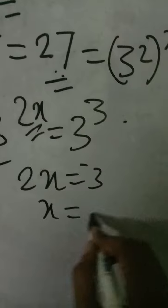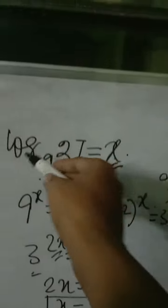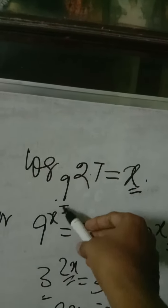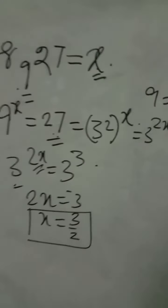So x will be equal to 3 by 2, which is the answer to this question. That means log base 9 of 27 is same as 3/2. So likewise we can find the value of problems like this. I think it is clear to everyone.